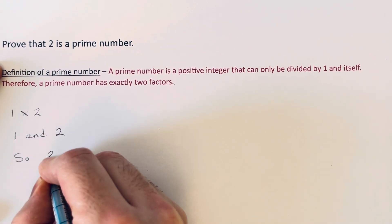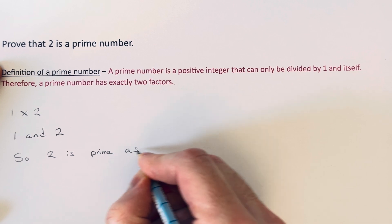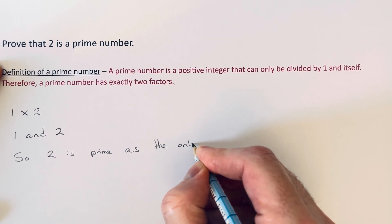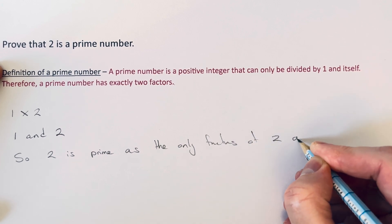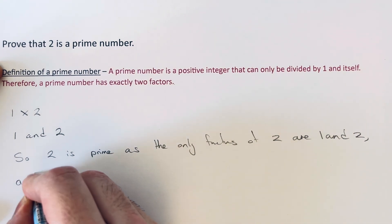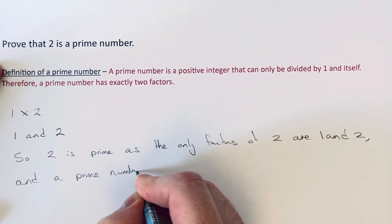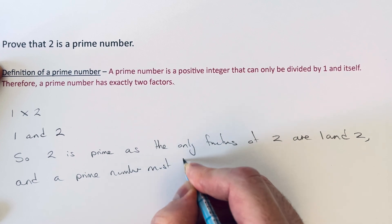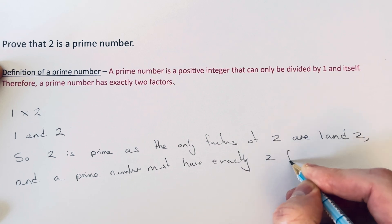So 2 is prime, as the only factors of 2 are 1 and 2, and a prime number must have exactly two factors.